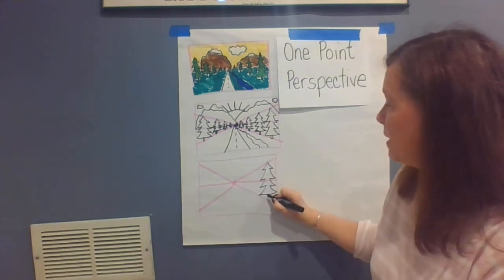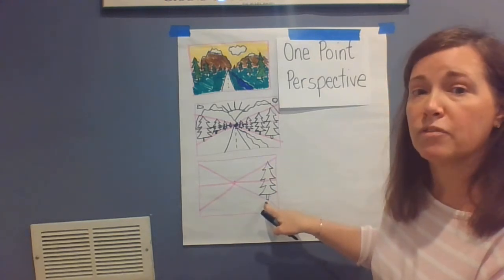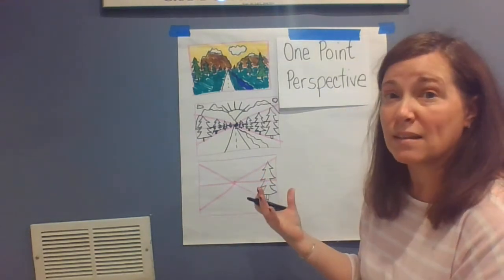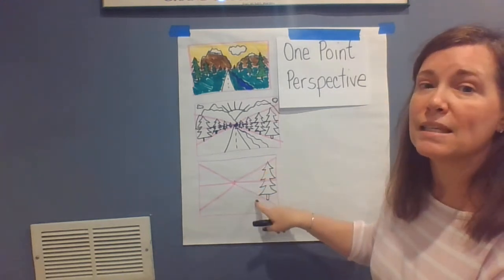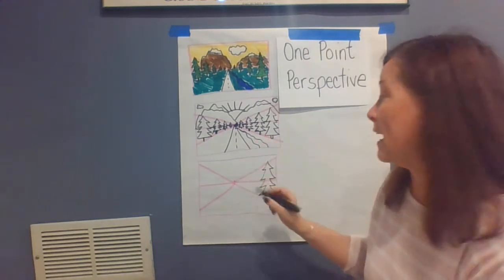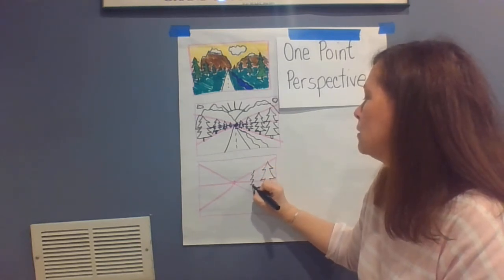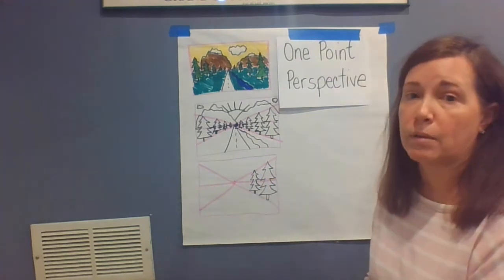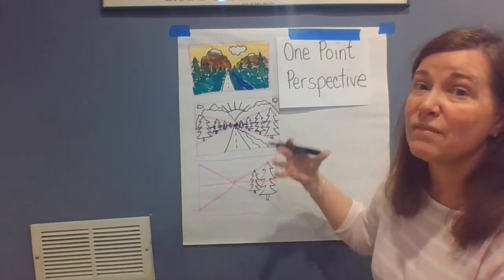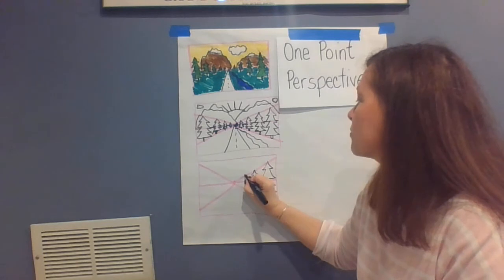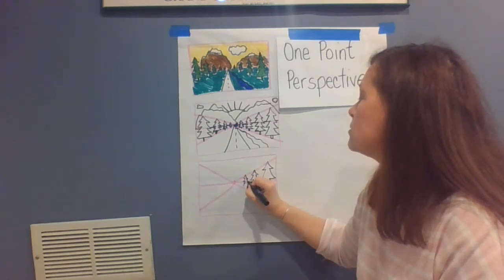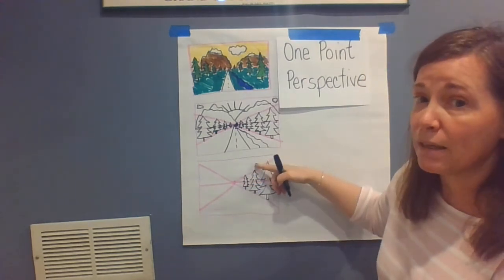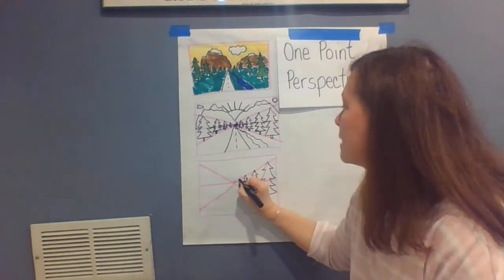The top of the tree is going to touch the top of the pink line, and the trunk of the tree is going to touch the bottom. Then we make the next one — it's a little bit further away, so we know it's going to get a little bit smaller. We use these lines to show us how much smaller it gets. We start at the top, make our tree go down towards the bottom, and make our tree trunk. The one that's next is even further away so it gets a little bit smaller. The top of the tree touches the top of the pink line and the bottom of the tree touches the bottom of the line.